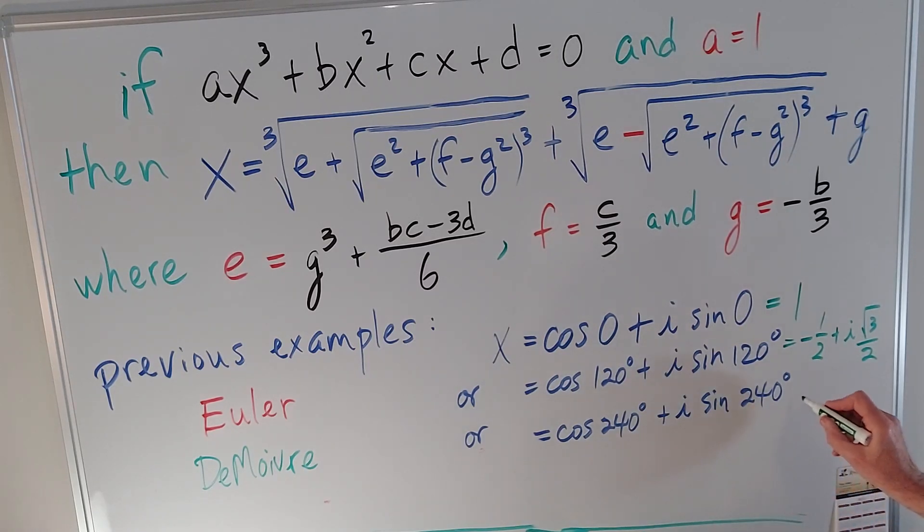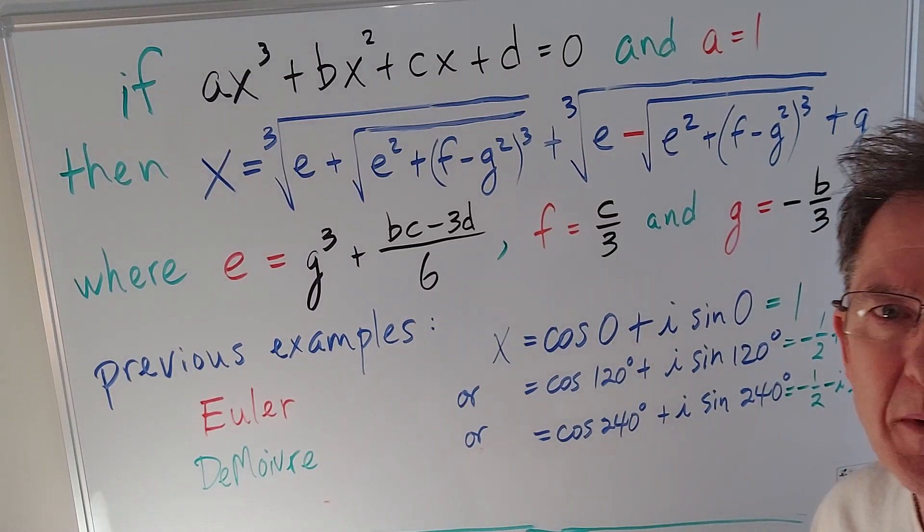Now the cos(240°) is the same as the cos(60°) except it's negative again so it's -1/2, and the sine(240°) is negative sine(60°) which is minus i times √3/2. Again that was the one we got using the quadratic formula.